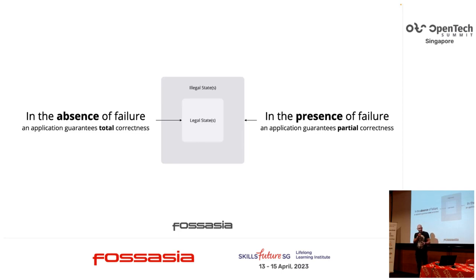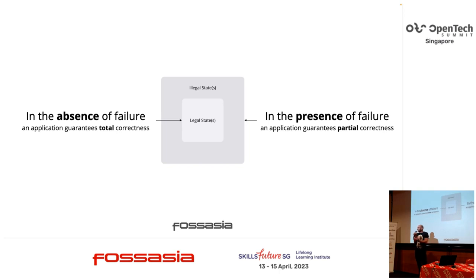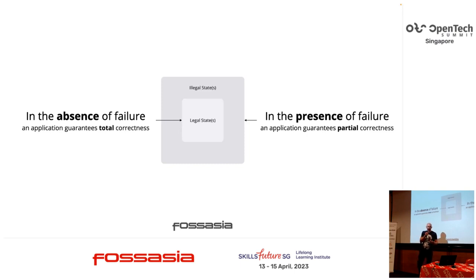In other words, if a system is failure tolerant, then the system trivially guarantees total correctness in the absence of failure. But it also guarantees at least partial correctness in the presence of failure. And if the system is actually able to guarantee total correctness even in the presence of failure, we speak of failure transparency.